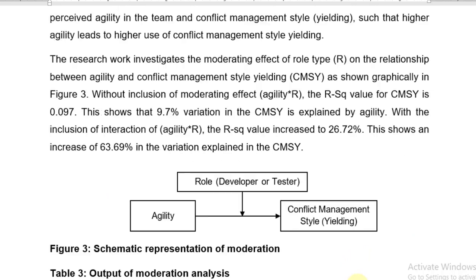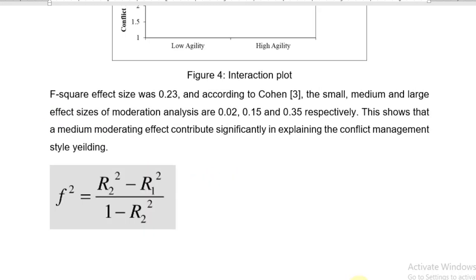In our case, we have R2-square is 0.2672 and R1-square is 0.097. The 0.097 is the R-square without moderating variable. Upon computation, we got 0.23. However, the small, medium and large effect sizes as per the Cohen are 0.02, 0.15 and 0.35 respectively.